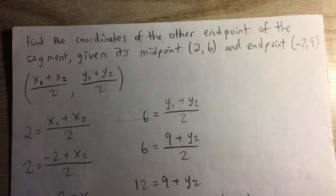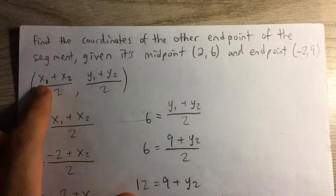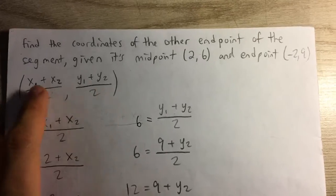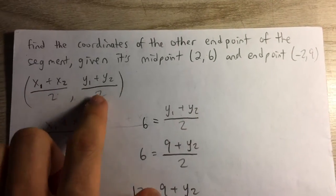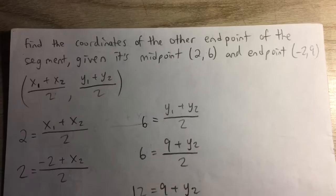Now here we know that the equation for the midpoint is the sum of the two x-coordinates of the two endpoints divided by 2, and the sum of the two y-coordinates divided by 2.